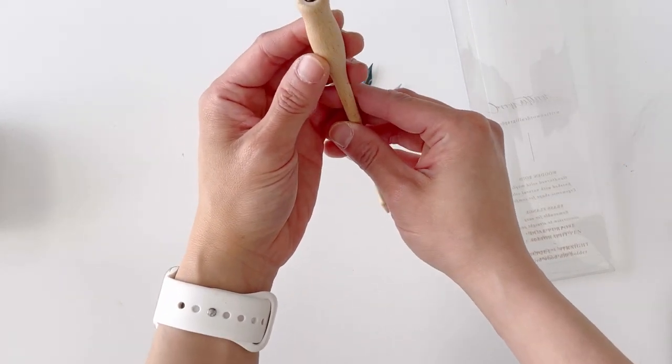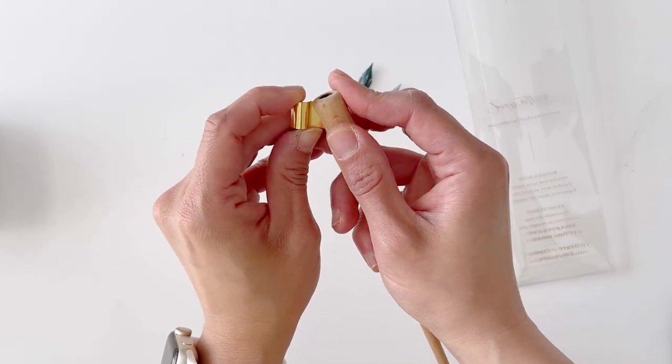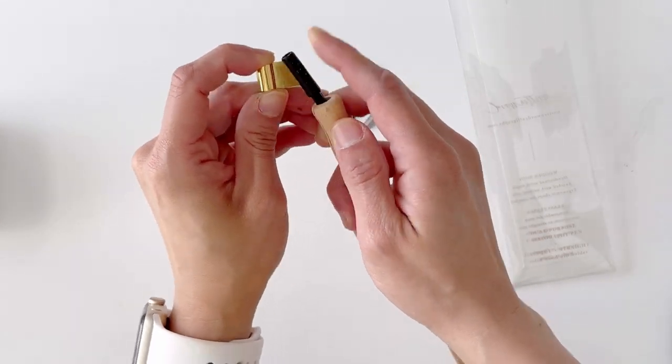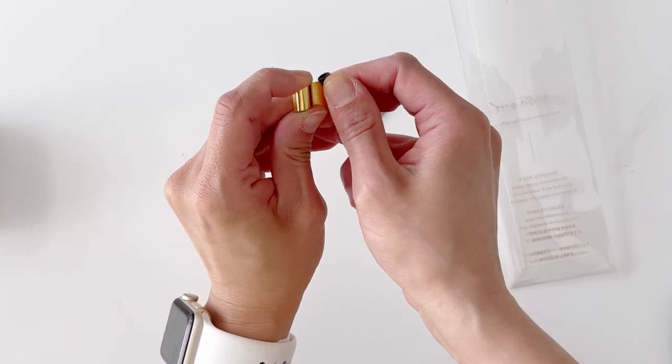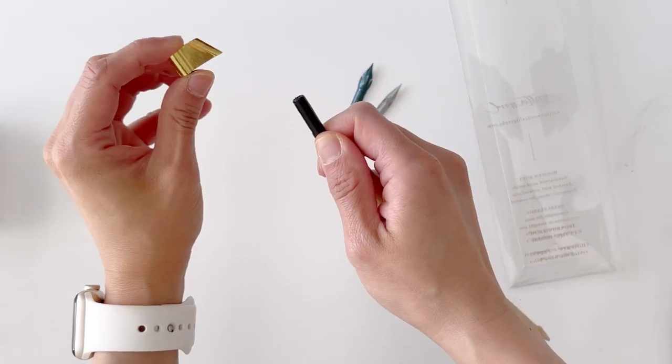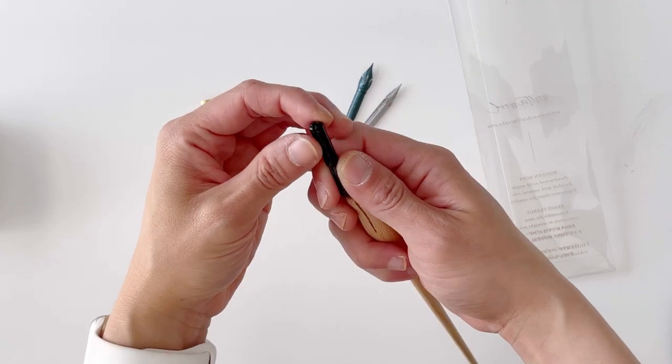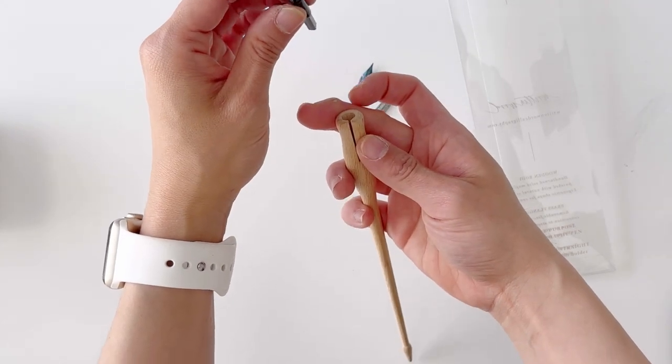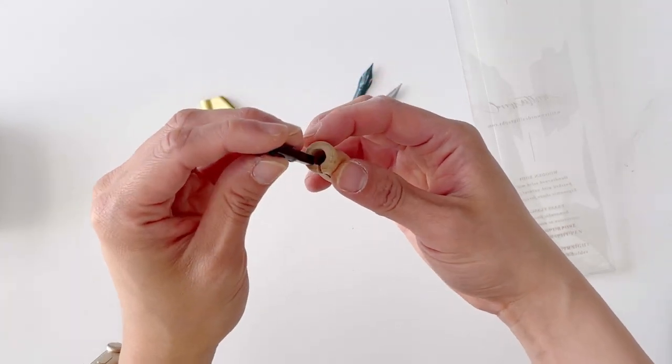This is a dual-purpose pen so you can actually remove this flange which makes it an oblique pen and make it into a straight pen. You just need to take this brass piece out and then put this plastic piece back into the pen itself.